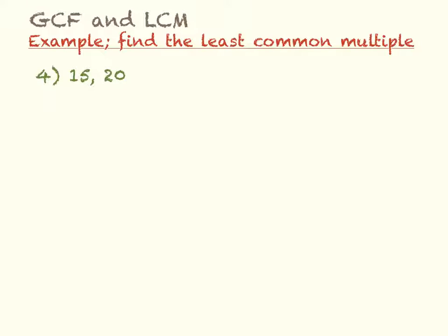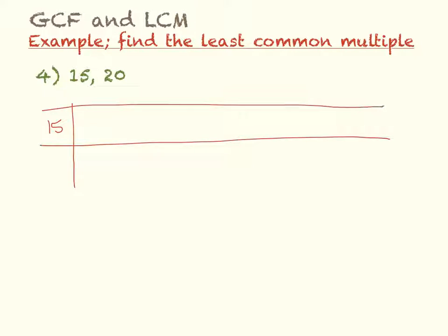For these next examples we want to find the opposite — the least common multiple. To find the least common multiple, it's easiest to set up a little table where you're finding multiples of each number. A multiple is what you get once you multiply a number by another number. So for multiples of 15, multiply 15 by 1, 2, 3, 4, 5, 6, and so on.